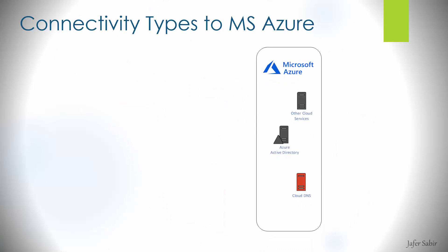We have our Microsoft Azure cloud subscription and some services up and running within the Azure cloud environment. Next we need to understand how we enable our staff — the company employees — to connect to the cloud services. There are three main options here, and regardless of which option we choose, we need something known as an Azure virtual network gateway.